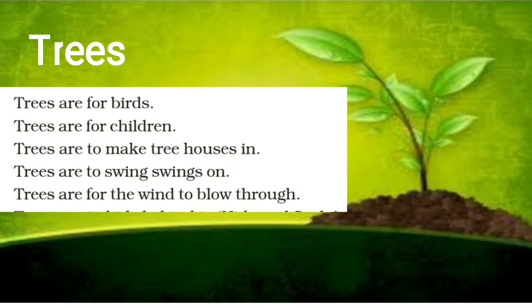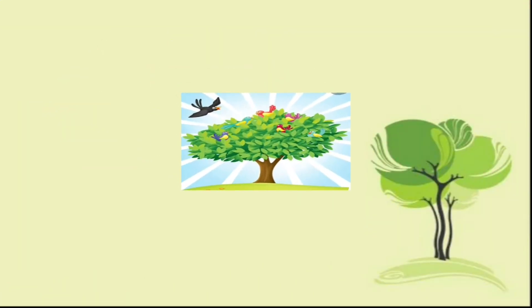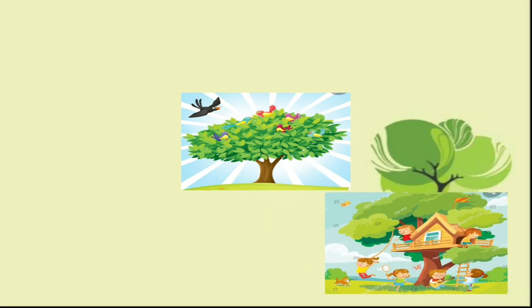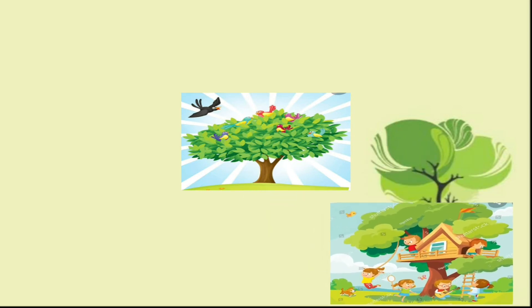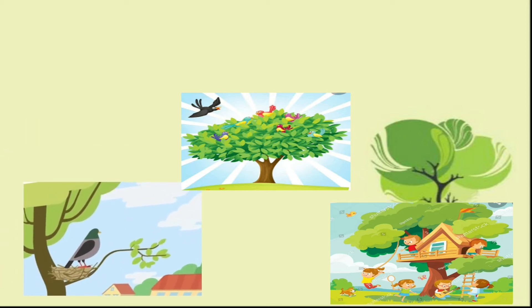This is what we are going to see through this poem explanation. The poet here is emphasizing and stressing all the advantages that each and every one of us receives from trees. Trees are available for everyone who lives on earth — for birds to take shelter and food, for children to play around them, and for insects and birds to make nests and take shelter.